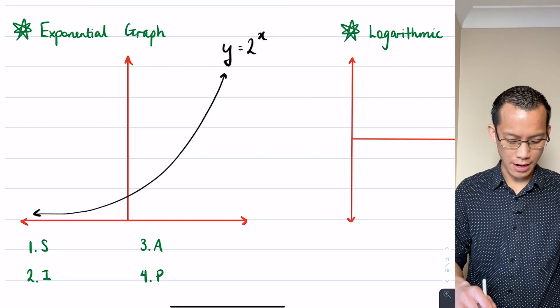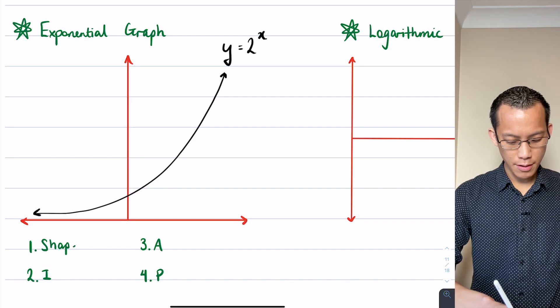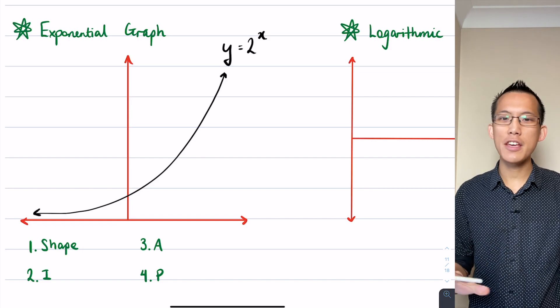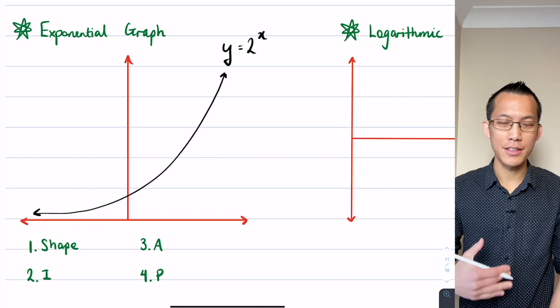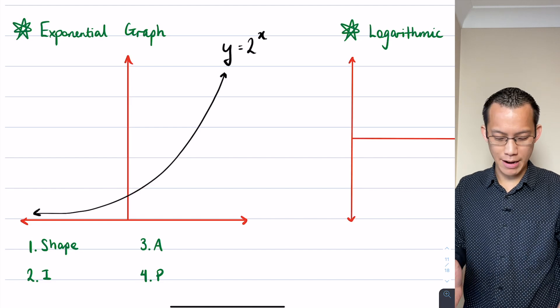The first feature that we're looking for is shape. This familiar exponential graph - the important thing is it's one smooth curve and it gets steeper and steeper forever. As your x values increase you get this steeper and steeper gradient.